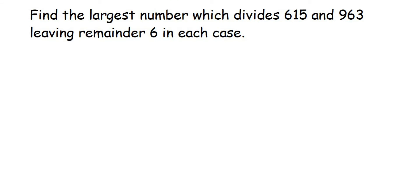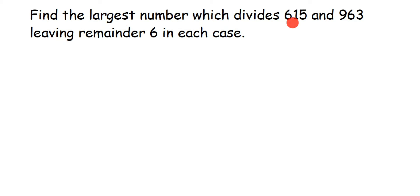Here's a question: find the largest number which divides 615 and 963 leaving a remainder of 6 in each case. We have to find what that number is — so whenever you're dividing with this number, both 615 and 963 leave a remainder of 6.